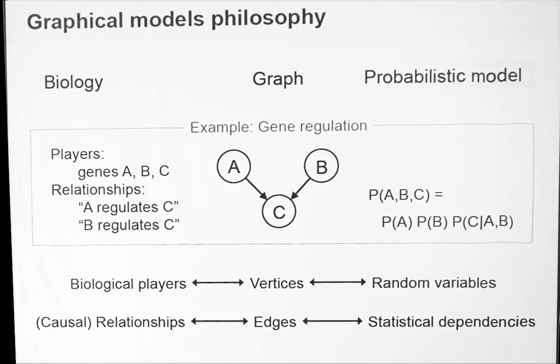Now I'm going to move towards graphical models. I will explain the philosophy behind graphical models on an example. You can consider some experiment or object that you want to model — here these will be your random variables. We will be looking at biological players, which will be genes — let's say A, B, and C — and there are relationships between these genes. In this example, this will be gene regulation. So we can imagine there's a relationship where A regulates C and B regulates C.